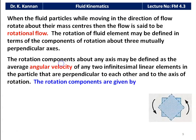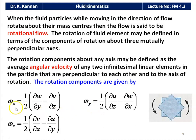The rotational components about any axis are defined as the angular velocity of two infinitesimal linear elements in the particle that are perpendicular to each other and the axis of rotation. The rotational components are: ωx = ½(∂w/∂y − ∂v/∂z), ωy = ½(∂u/∂z − ∂w/∂x), and ωz = ½(∂v/∂x − ∂u/∂y).